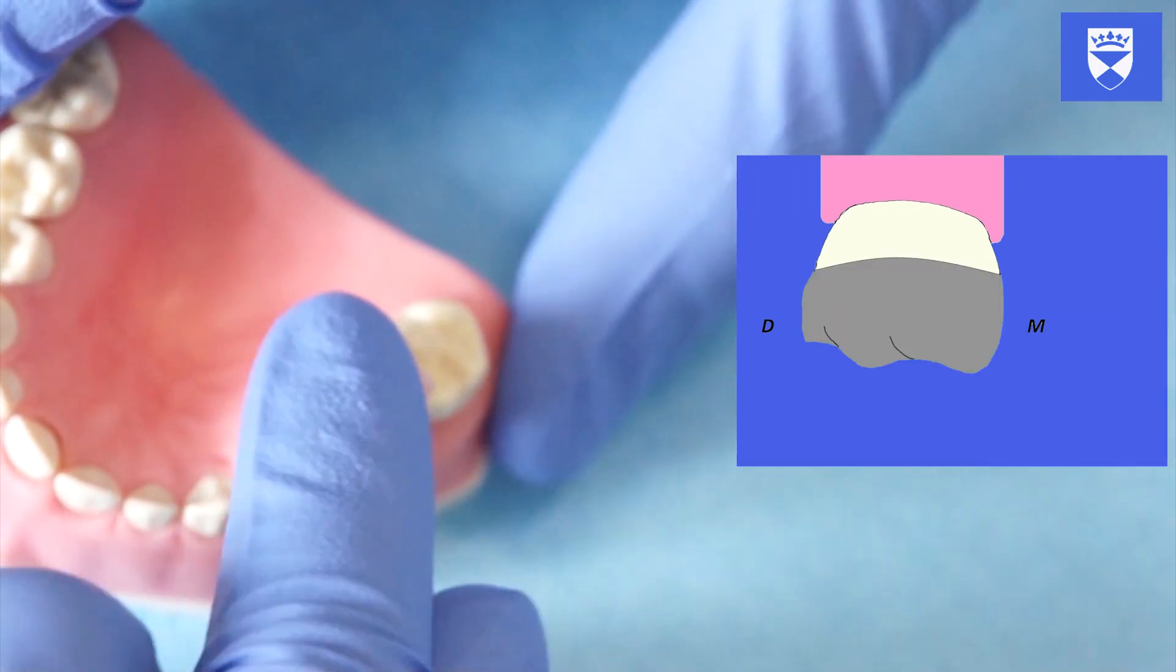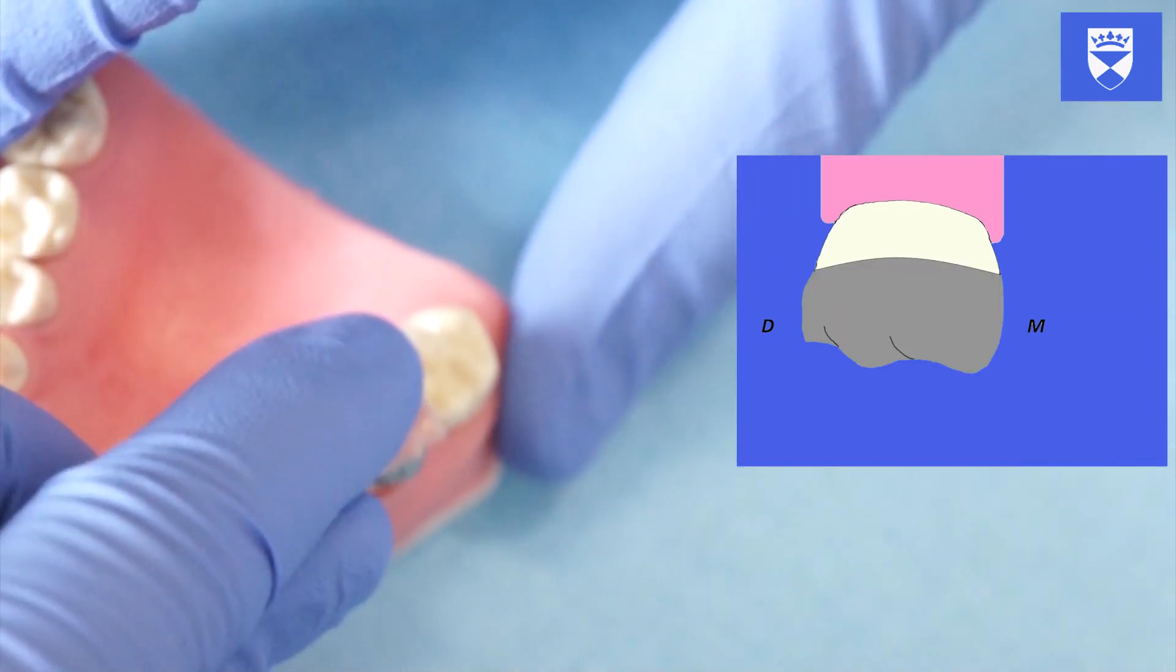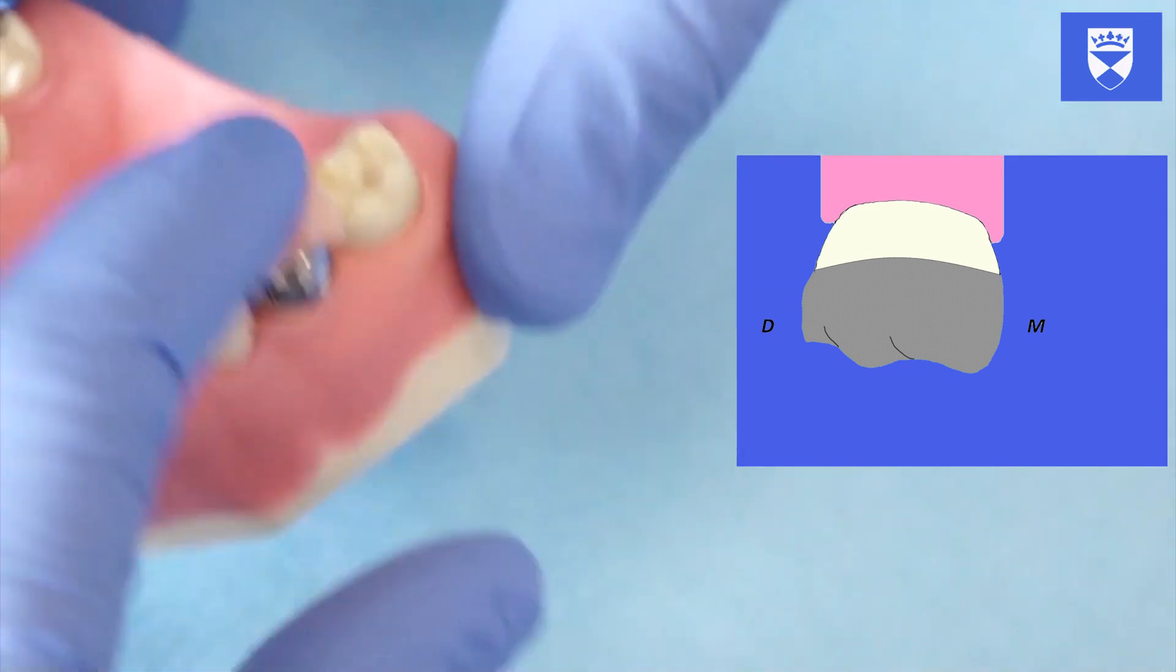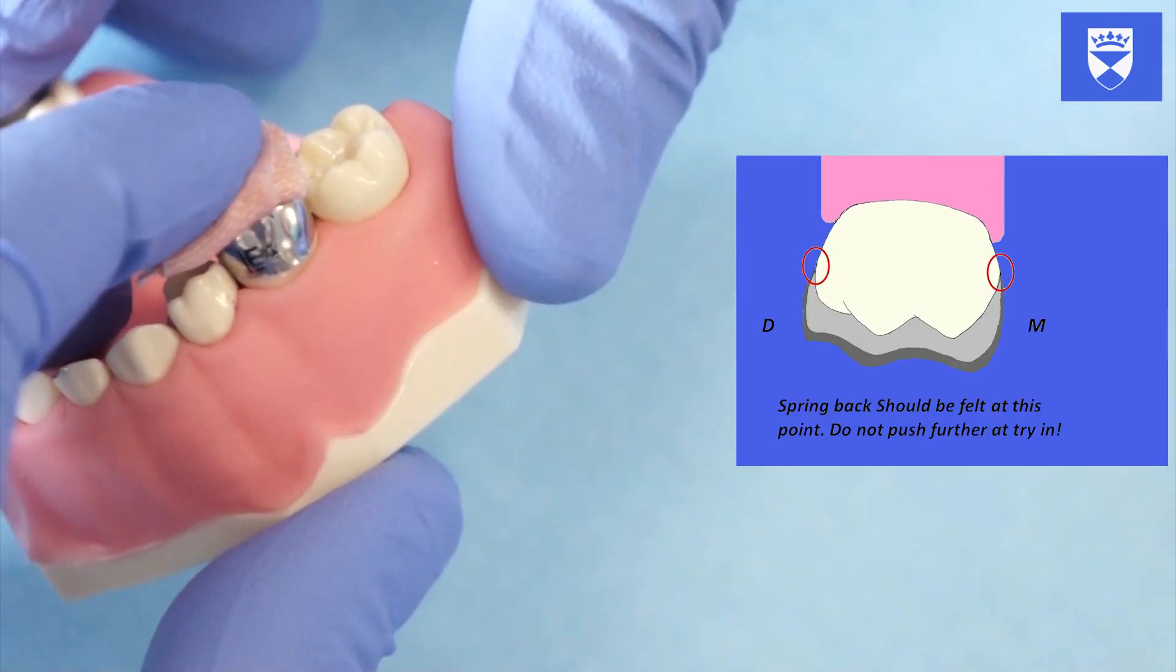The crown should be able to fit over the point of maximum convexity of the tooth with firm pressure. It is important when trying the crown on the tooth that you do not push the crown beyond this point. Apply enough pressure to observe spring back.